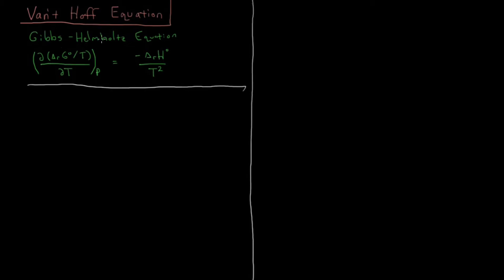Let's start by looking at the Gibbs-Helmholtz equation, which is going to be used here. That says that the partial derivative of the Gibbs energy divided by temperature with respect to temperature at constant pressure is equal to the negative enthalpy divided by T squared. This is true for any kind of Gibbs energy and analogous enthalpy, but here we're specifically interested in the standard Gibbs energy of reaction and the standard enthalpy of reaction.